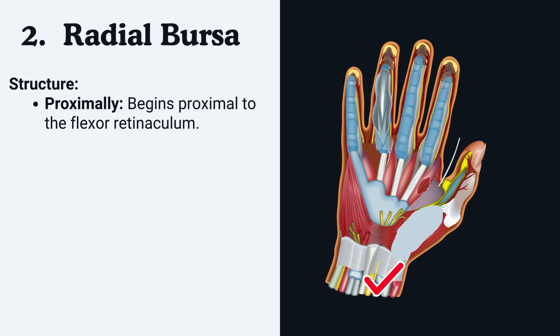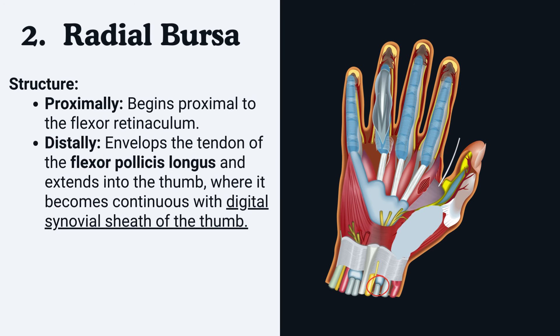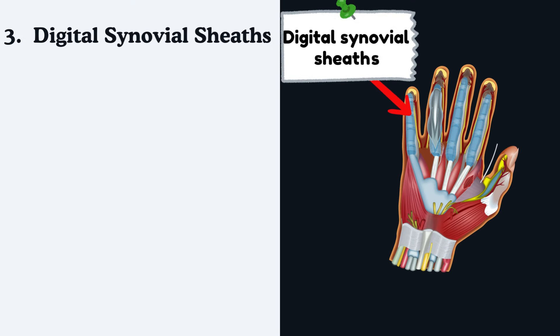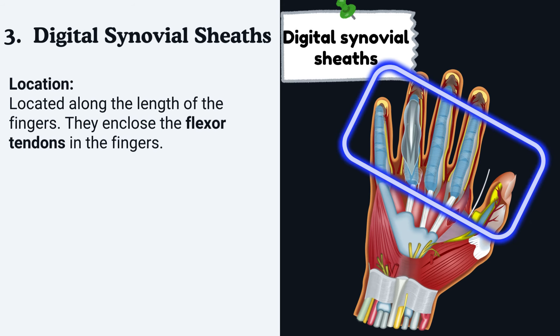Structure of the radial bursa: proximally, it begins proximal to the flexor retinaculum. Distally, it envelops the tendon of the flexor pollicis longus and extends into the thumb, where it becomes continuous with the digital synovial sheath of the thumb.